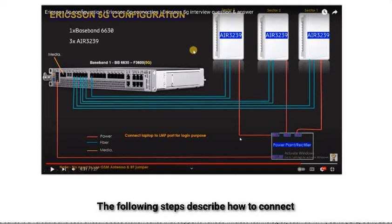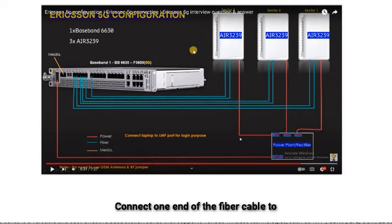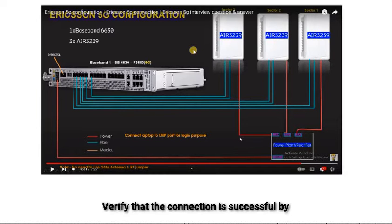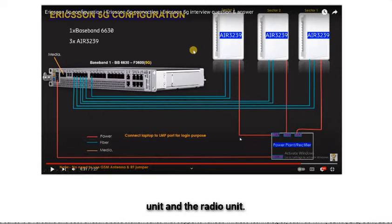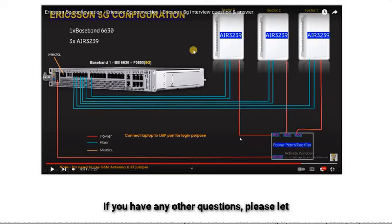Steps to connect the Baseband 6630 to the ARR3239 using a fiber cable: Remove the dust caps from the CPRI port on the baseband unit and the radio unit. Connect one end of the fiber cable to the CPRI port on the baseband unit and the other end to the CPRI port on the radio unit, making sure the connectors are properly aligned and locked in place. Verify the connection is successful by checking the LED indicators, which should show green or yellow depending on the CPRI link status.